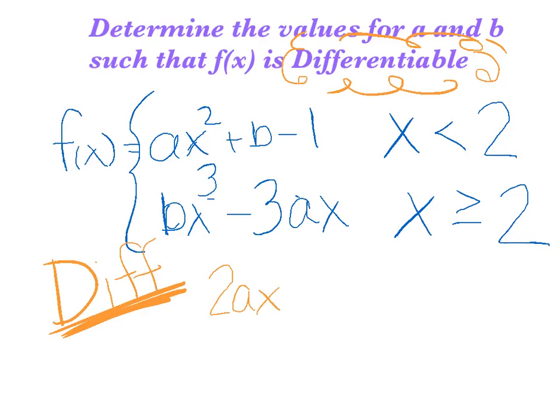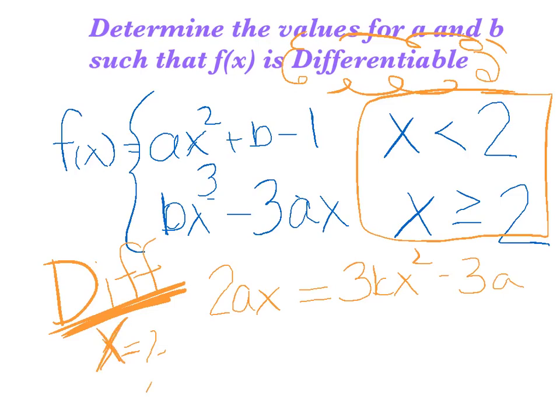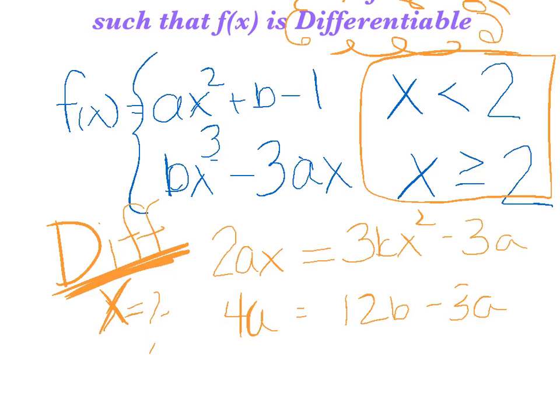So let's carefully take the derivative of the left side. ax² should be 2ax. That b is a constant, 1 is a constant, so their derivatives are 0. Take the derivative of the right, so that's 3bx² minus 3a. Now remember, you actually know a value - you know that x is equal to 2. So if I plug x equals 2 in, this is true when x is 2, that was the break point. So I should get 4a equals 12b minus 3a. And I can't go too far, I'm just going to at least put the a's on the same side. I'm going to say 7a equals 12b.